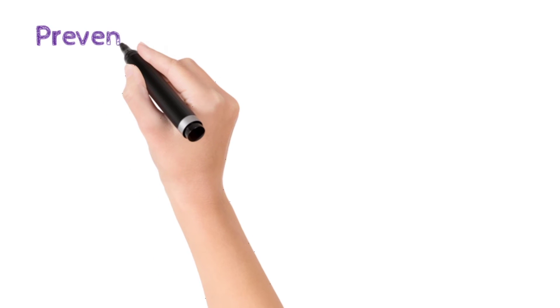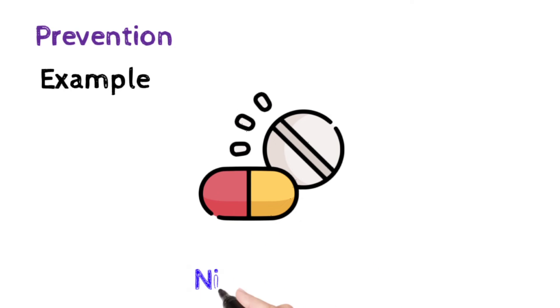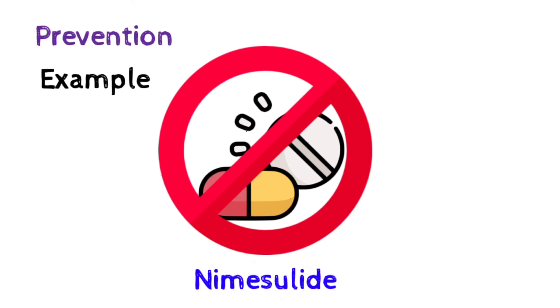The last step is prevention. To understand this we directly jump to the example. Based on all the parameters, the drug Nemesulide was found unsafe to use and was banned from the market considering patient safety.